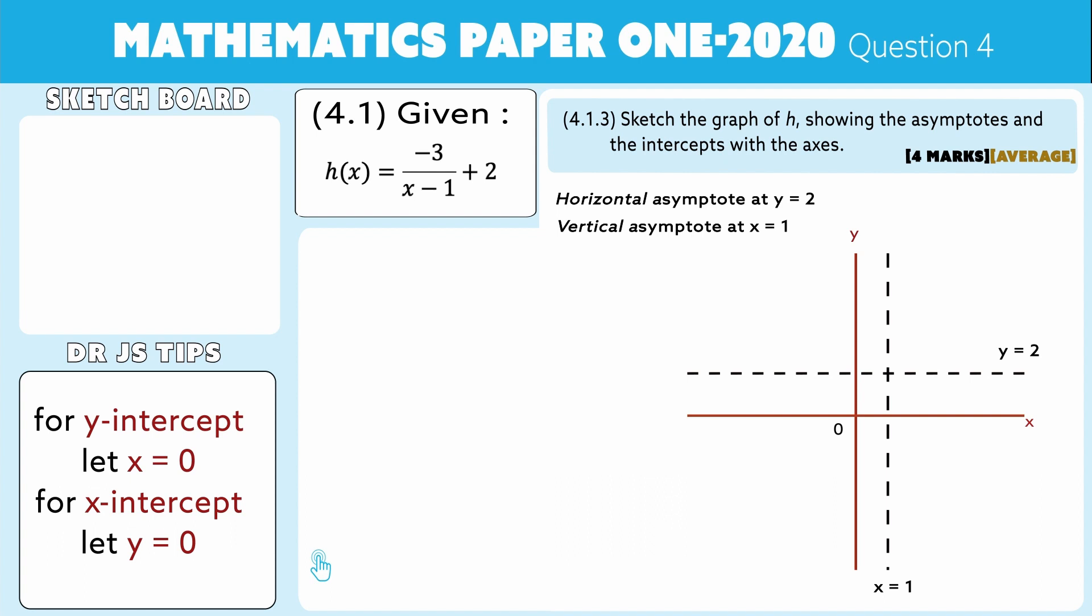Now folks, I'm going to make an important note for you on the sketchboard. You always write in the equations of the asymptotes. Always write them in, and then obviously the coordinates where they cross. So let's do that calculation.